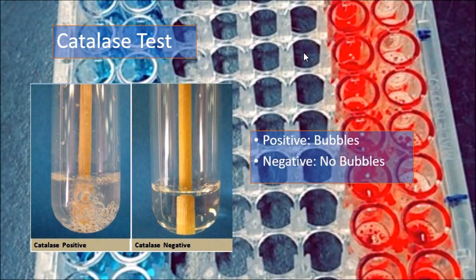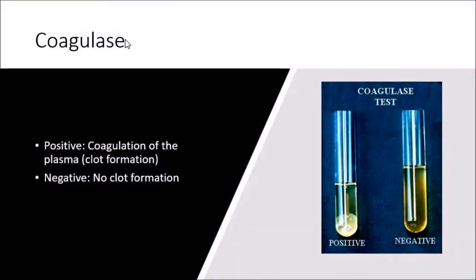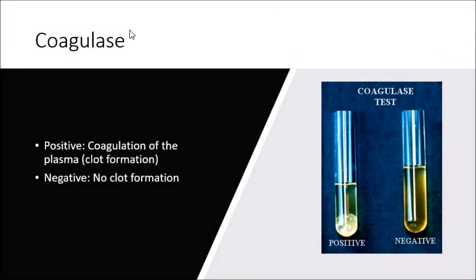The next test is coagulase. The purpose is detection of coagulase that is excreted by Staphylococcus aureus that causes fibrin clot formation. The procedure here would be to inoculate a loopful of organism into a coagulase tube and then incubate this tube for 24 hours at 37 degrees Celsius, fairly warm, very close to human body temperature. The positive is going to be this clot formation right here, and the negative is clearly no clot formation.